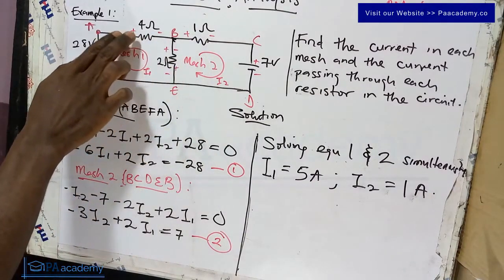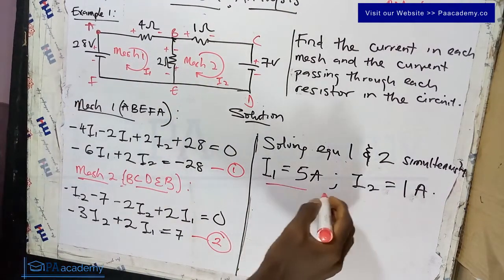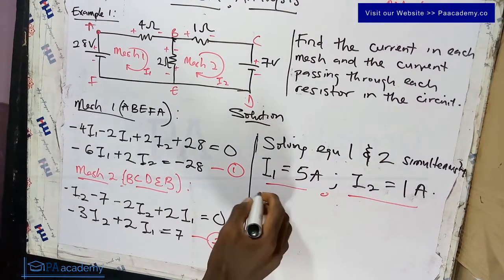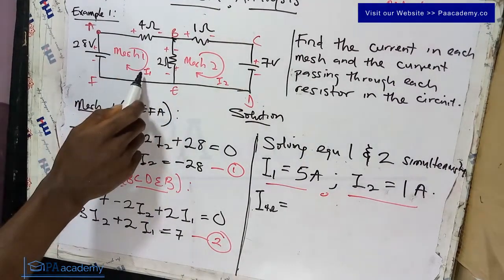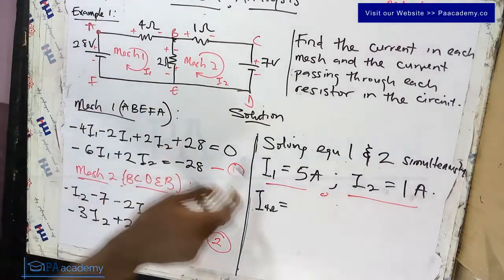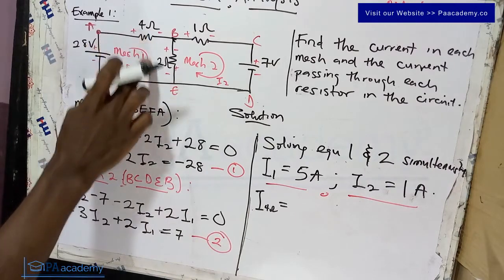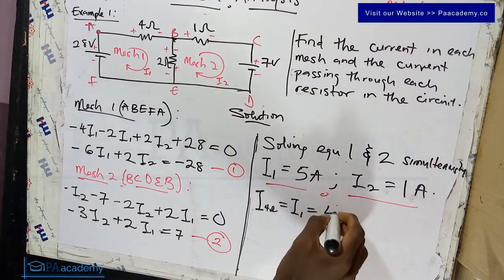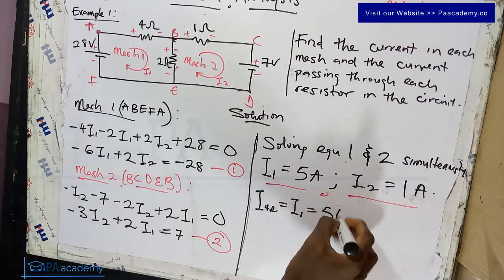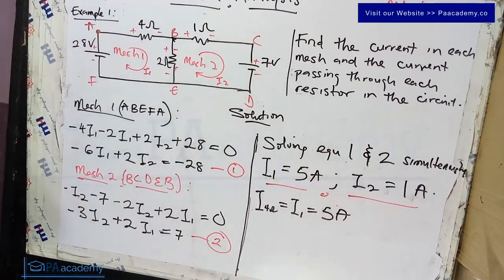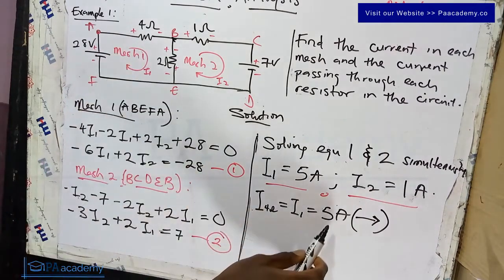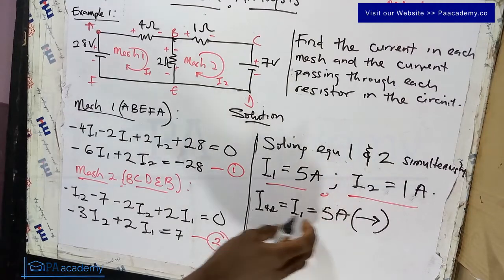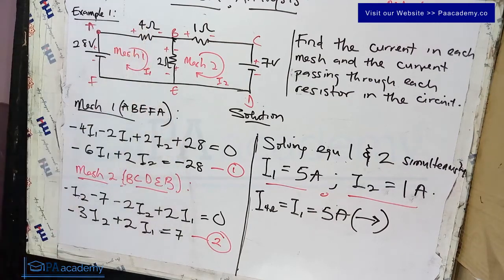Now let's calculate the current flowing through each resistor — we have the 4Ω, 1Ω, and 2Ω resistors. Starting with the 4Ω resistor: if you look at it, the only current flowing through it is I1, since it belongs exclusively to mesh one. The value of I1 is 5 amperes, so the current through the 4Ω resistor is 5 amperes. The direction is clockwise as assumed, which is confirmed as correct because we obtained a positive value.